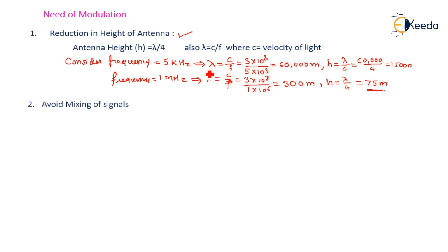Second, it avoids mixing of signals. If baseband sound signal transmitted without using modulation by more than one transmitter - we know that sound signal frequency is 20 Hz to 20 kHz - within such a range, if several transmitters are transmitting the signal without modulation, then all signals will be in the same range. Signals will get mixed and cannot be separated.